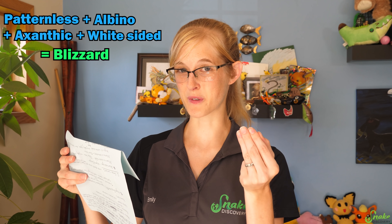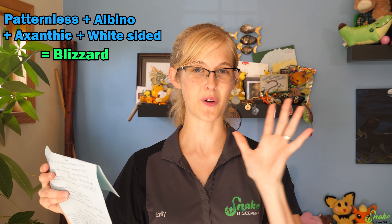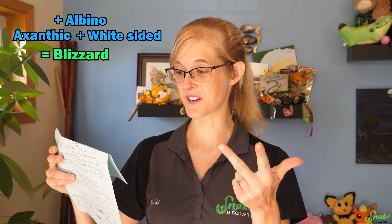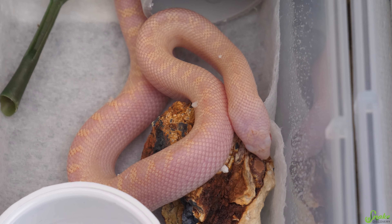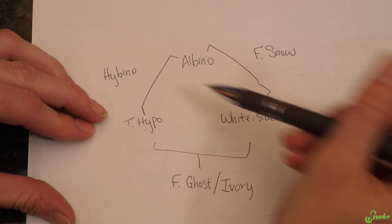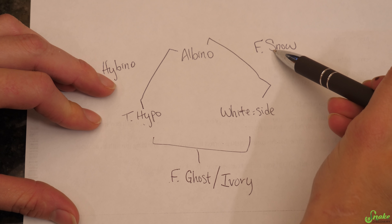In addition, you can have a patternless-albino-axanthic-white-sided — we're diving into four-gene combos now — and that is sometimes referred to as a blizzard morph bull snake. They are all white, so I can understand why it's called a blizzard. But you can also have an axanthic-albino-white-sided, which is also called a blizzard, or a hypo-albino-white-sided, which is also called a blizzard. So again, it's just easiest to list all the genes individually.